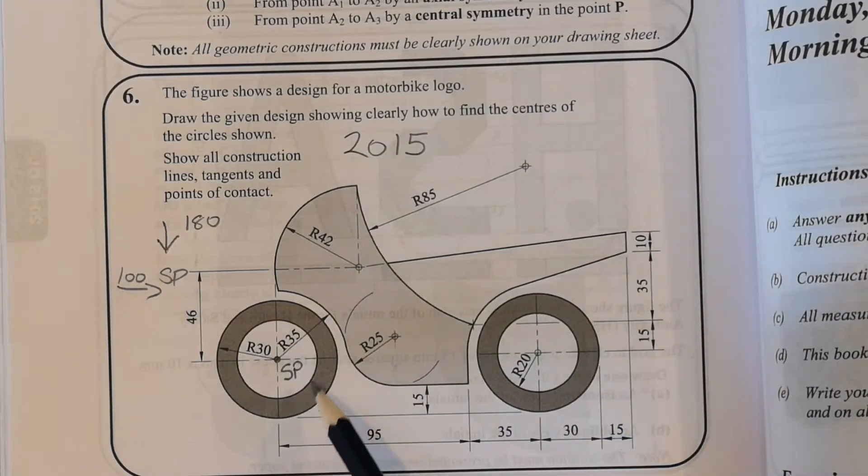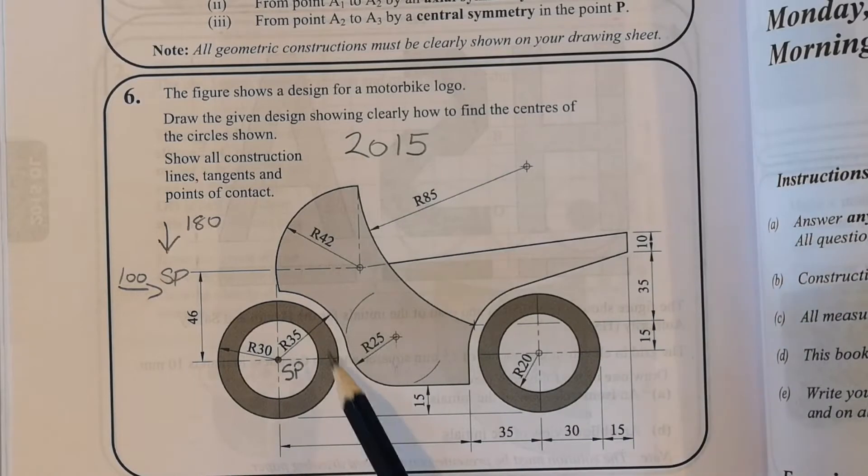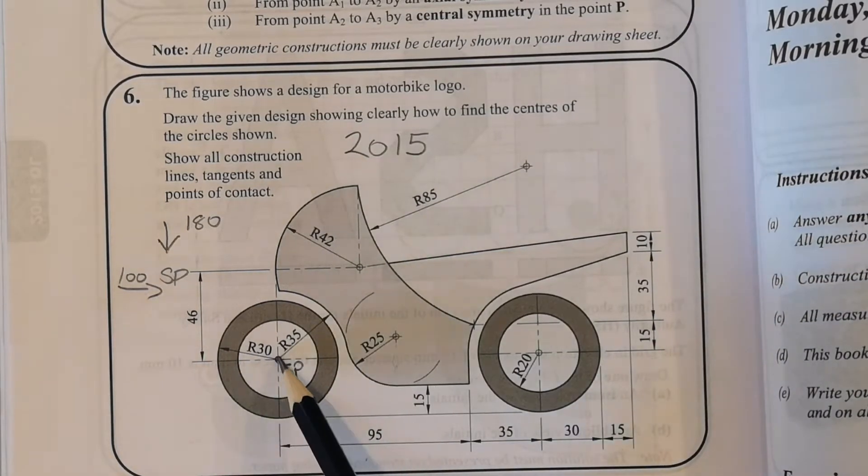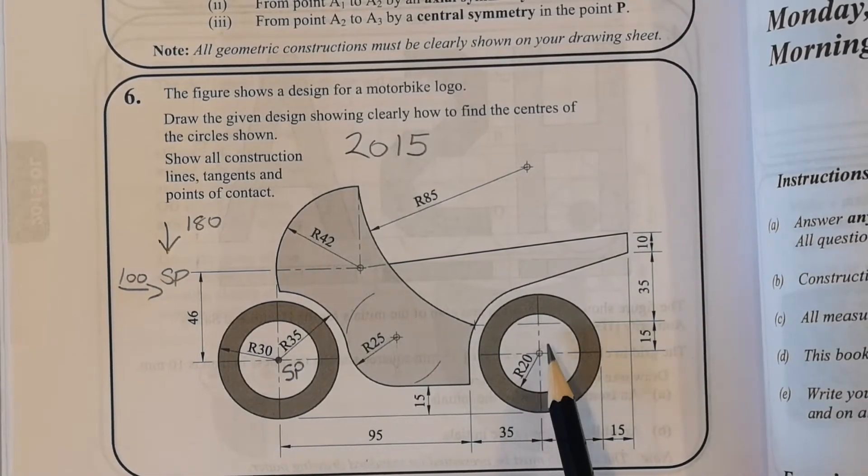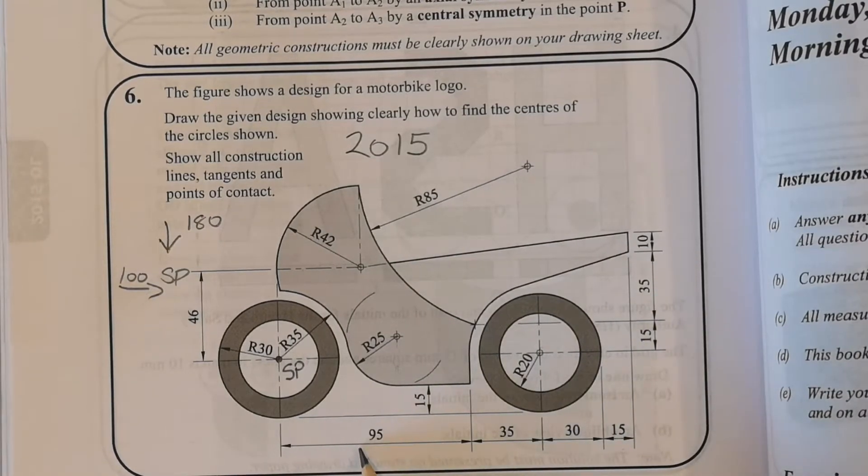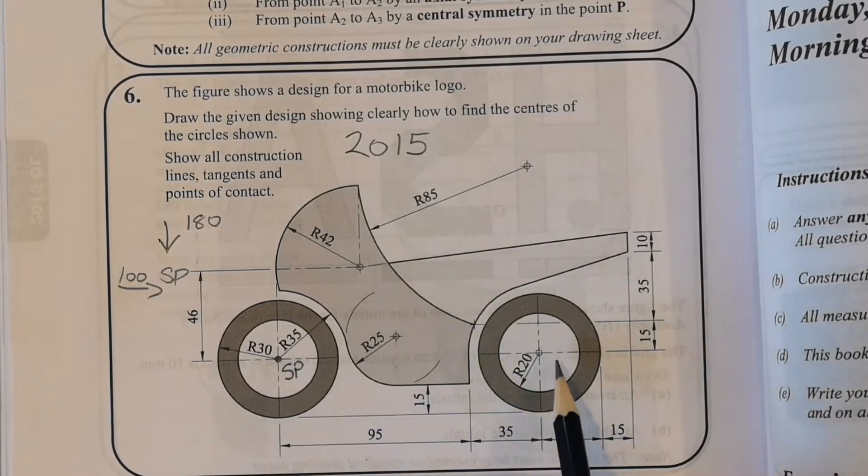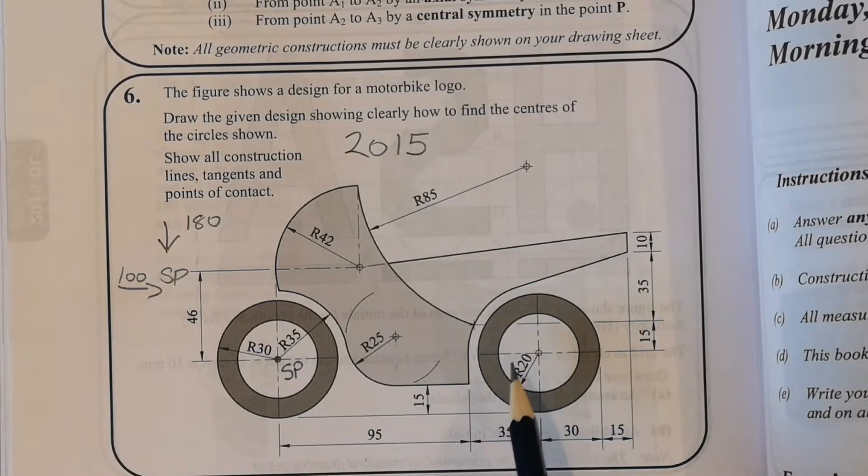So what I want you to draw here is the wheel - the inside circle is radius 20, the outside circle is radius 30. Do your wheel at the front and your wheel at the back as well. You can see there's a distance of 130 millimeters between the centers in a straight line, so go ahead and get that done now.